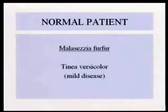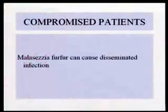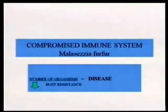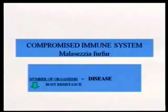Malassezia furfur causes tinea versicolor — a very mild disease, cosmetic really, just a slight itch. We know what it is from the spaghetti and meatballs morphology. And now we know it can cause disseminated infection via intravenous catheters. What we have here is compromise — it's a low virulence organism and the host resistance decreases, so you get disease.